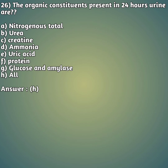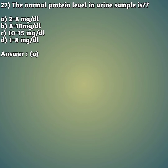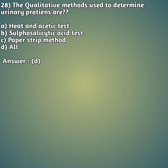Question 27: The normal protein level in a urine sample is — option A: 2 to 8 mg/dL, option B: 8 to 10 mg/dL, option C: 10 to 15 mg/dL, option D: 1 to 8 mg/dL. The correct answer is option A, 2 to 8 mg/dL.